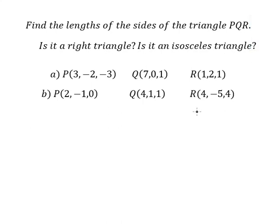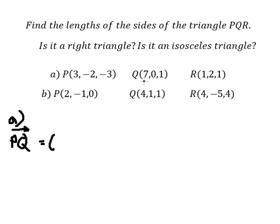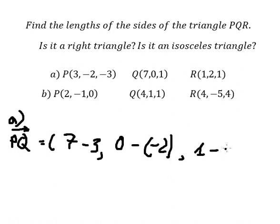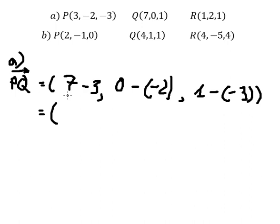Hello everybody, today I want to show you how to answer question eight. We need to find the length of the triangle. To do this, we need to find the vector BQ, QR, or RB. So let's find vector BQ. We use point Q minus point B: seven minus three, zero minus negative two, and one minus negative two, number three. Simplifying, we get four, two, and four.